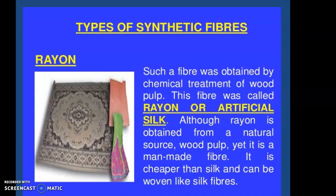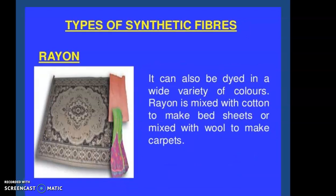Rayon is cheaper than silk and can be woven like silk fibers. It absorbs sweat and is very comfortable to wear in summers. Uses of rayon include: making fabrics in the textile industry; mixing with cotton to make bed sheets, dresses, aprons, and caps; mixing with wool to make beautiful and durable carpets; manufacturing tire cords; and making bandages and lint for surgical dressings.